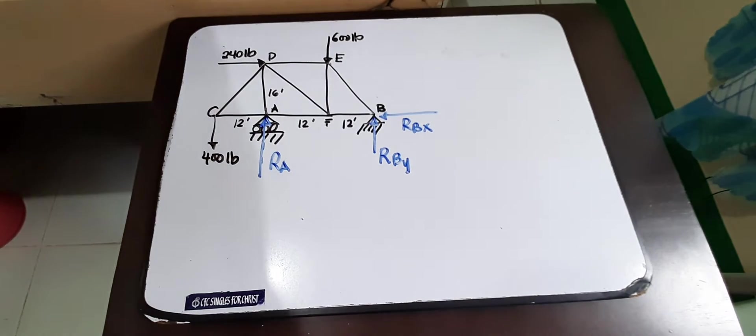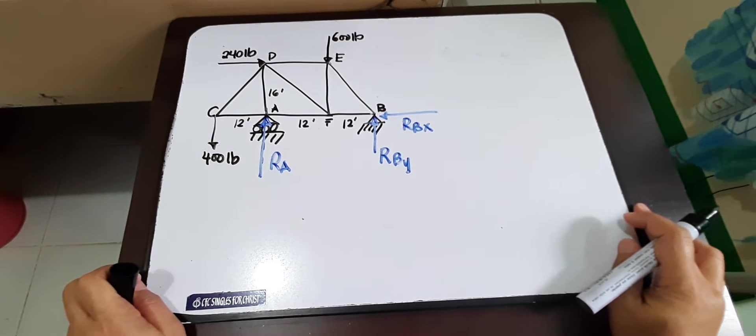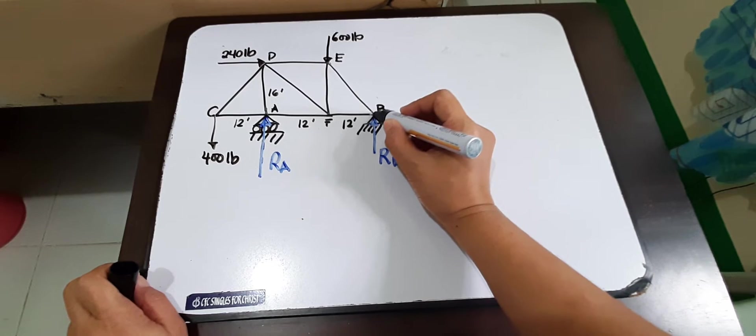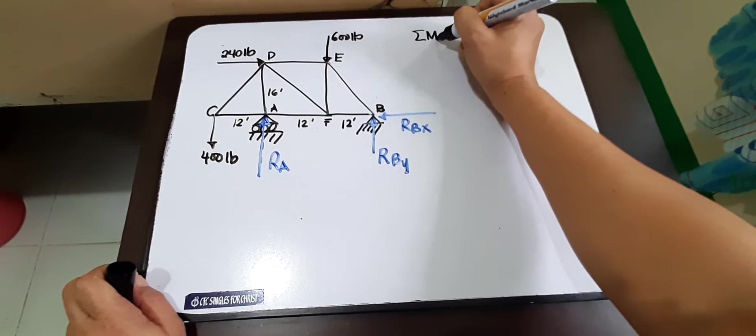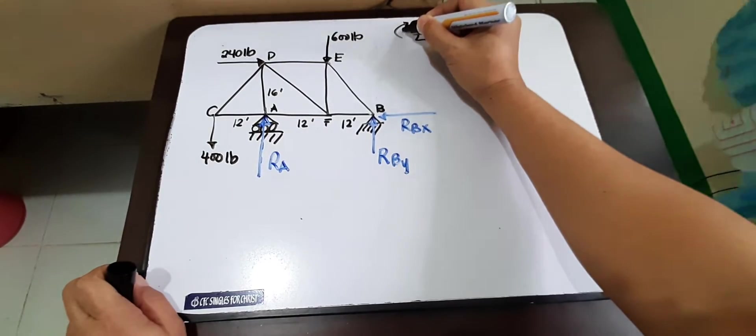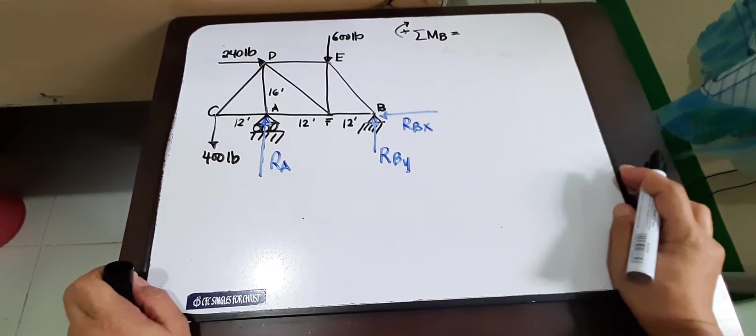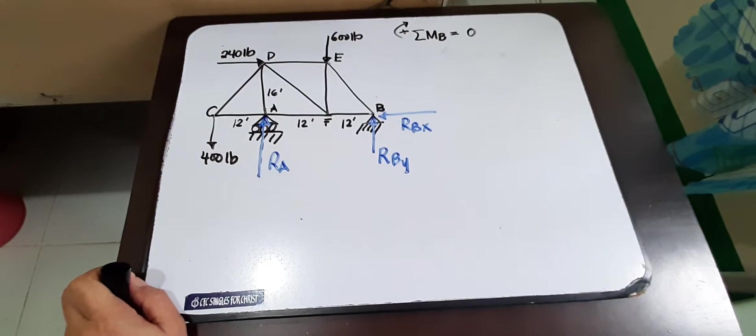So to solve for that, we will first take moment wherein most of the unknowns will be eliminated. So let us take moment at this point, take moment at B. And in statics, summation of all the moments at B should be equal to zero.